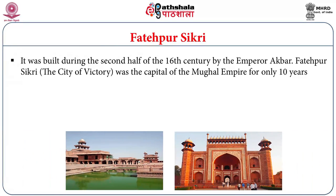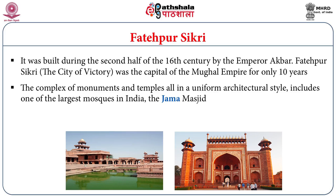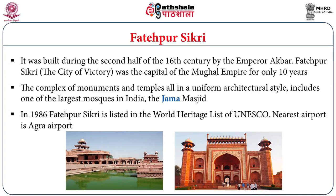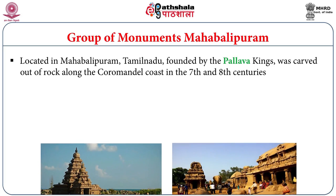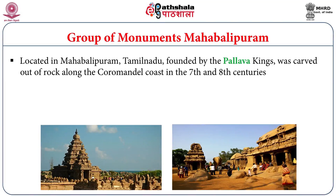Fatehpur Sikri is a world heritage site belonging to the 16th century, built by Emperor Akbar to commemorate a particular victory. It was the capital of the Mughal Emperor for almost 10 years. The complex of monuments and temples is all in a uniform architectural style, including one of the largest mosques in India — the Jama Masjid. This particular site was inscribed under the UNESCO Heritage list in the year 1986, and the closest airport is Agra Airport.